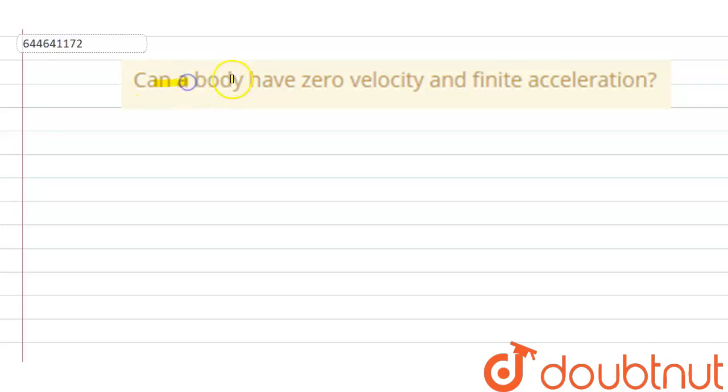Can a body have zero velocity and finite acceleration? So this question is based on the chapter motion in a straight line. In this question it is written: can a body have finite acceleration at zero velocity? Yes, it is possible.